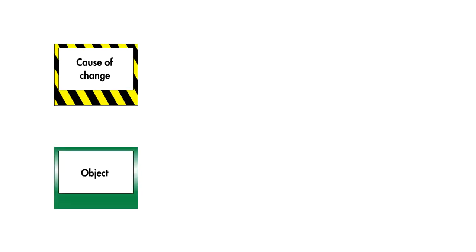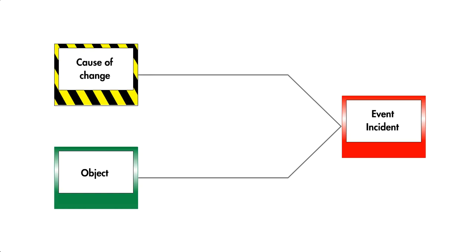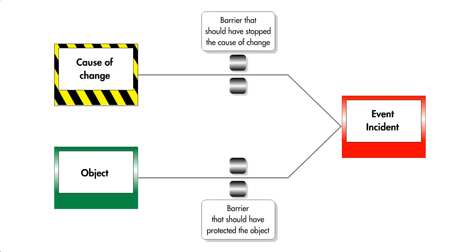In Tripod beta, an incident is shown as a series of trials, that is, the cause of a change, the object changed, and the resulting incident event. It also shows the barriers that should have stopped the incident.